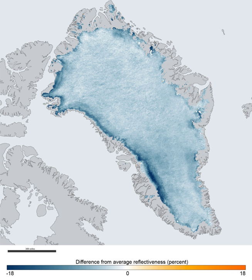It is the second largest ice body in the world, after the Antarctic Ice Sheet. The ice sheet is almost 2,400 kilometres long in a north-south direction, and its greatest width is 1,100 kilometres at a latitude of 77 degrees north, near its northern margin. The mean altitude of the ice is 2,135 metres.